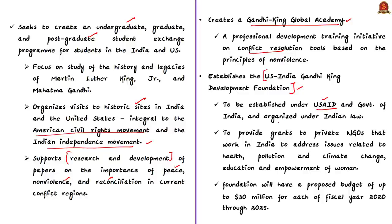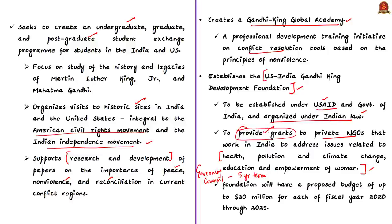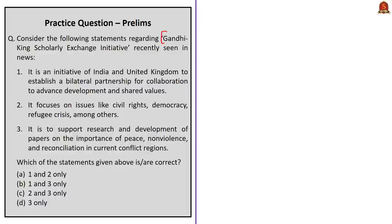The mandate of this foundation is to provide grants to non-governmental organizations working in India, particularly in health, pollution, climate change, education, and empowerment of women. Both governments will convene a governing council to provide guidance. The majority of council members will be appointed by the United States for a term of five years. The council will identify development priorities and define criteria for awarding grants. The foundation will have a proposed budget of up to $30 million per financial year from 2020 through 2025.